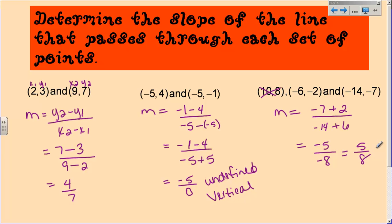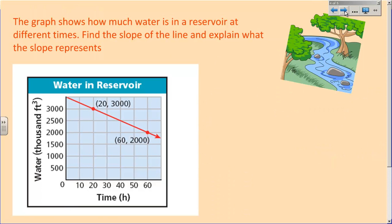Let's look at another example. So I have a graph that shows how much water is in a reservoir at different times. So we're supposed to find the slope of the line and explain what that slope represents. Well, they gave us the points on the line. Now you have a graph. We could count rise over run. But since we're practicing slope formula, we're going to use our slope formula. When you are looking at a graph and you want to use the formula, the point on the left is always the X1, Y1, and the point on the right is the X2, Y2. You should always read it left to right.